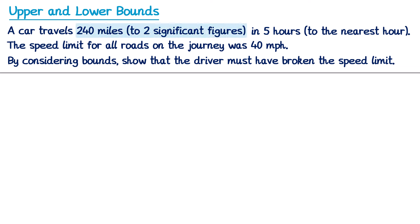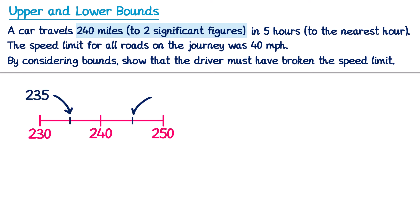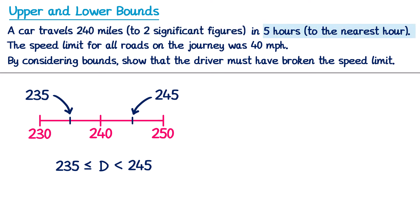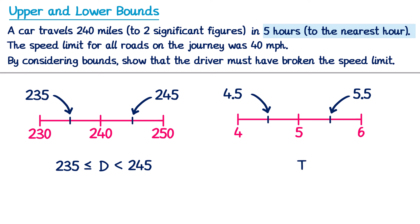Starting with 240 miles to two significant figures: putting 240 in the middle, the number immediately below to two significant figures is 230 and above is 250. The error interval is halfway between those — 235 up to 245. So the error interval for the distance is 235 ≤ distance < 245. For the 5 hours to the nearest hour: one hour below is 4, one hour above is 6, so the error interval is 4.5 ≤ time < 5.5.